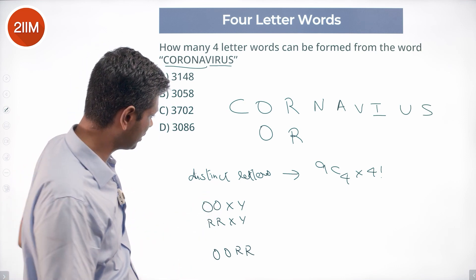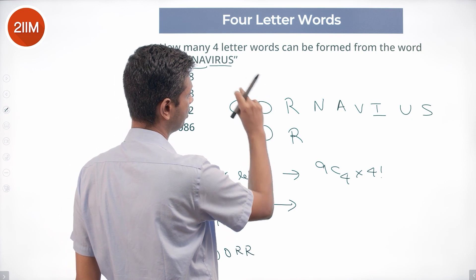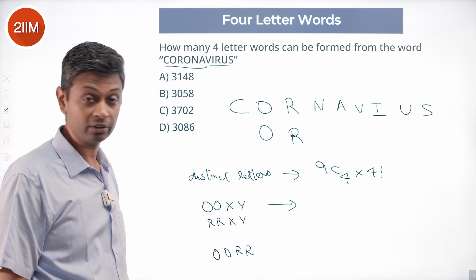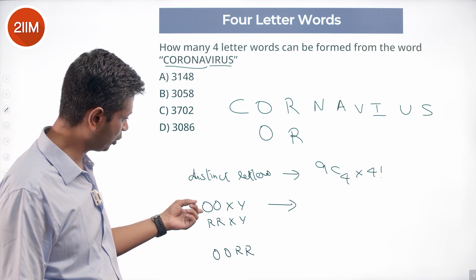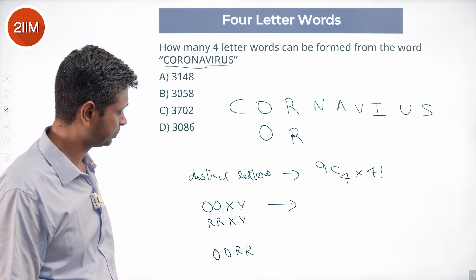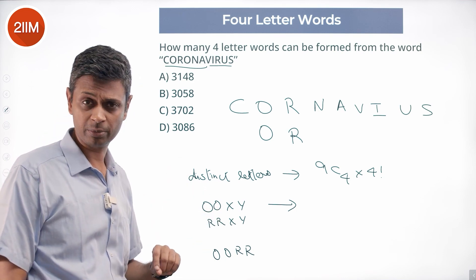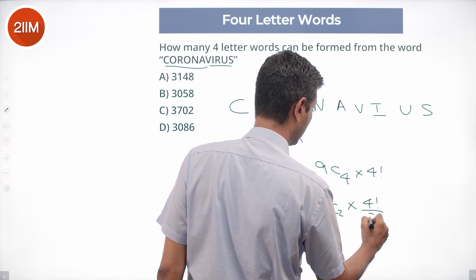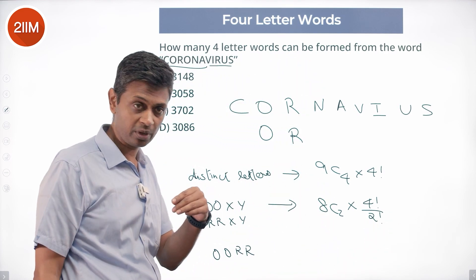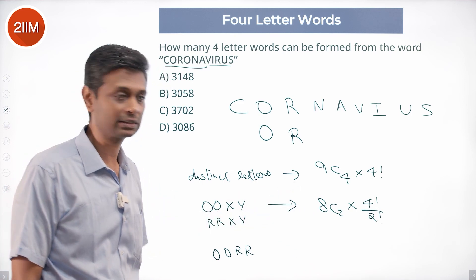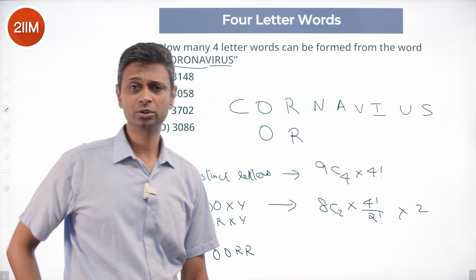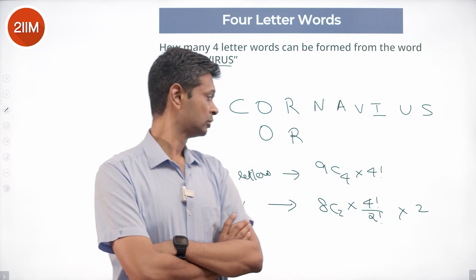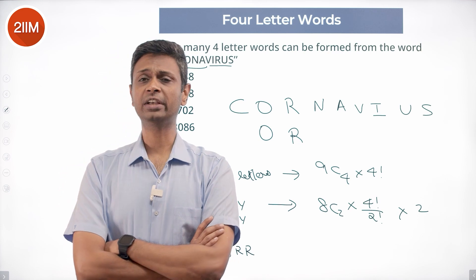For the case O, O, X, Y — O appears twice and we select two more distinct letters from the remaining eight letters in 8C2 ways. Then the four letters O, O, X, Y can be rearranged in 4! / 2! ways. For example, selecting V and I gives O, O, V, I which can be rearranged in 4!/2! ways.